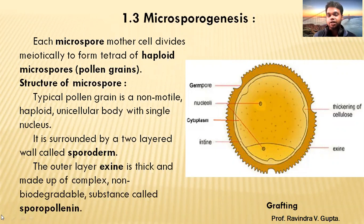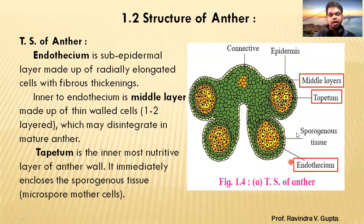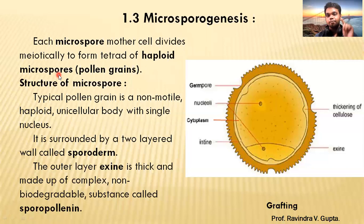Now, where the microspore cells are located — we have seen that in the last lecture. You can see in this picture: the sporogenous cell consists of mother spore cells. Each microspore mother cell divides meiotically, meaning meiosis occurs, and a tetrad of haploid microspores is formed — four cells form in meiosis. This haploid microspore will form the pollen grain, which you can see in this picture.